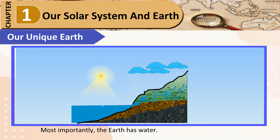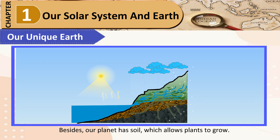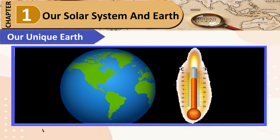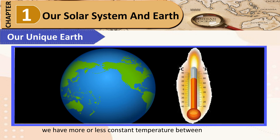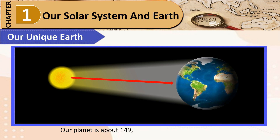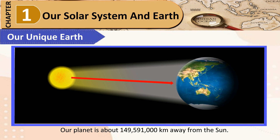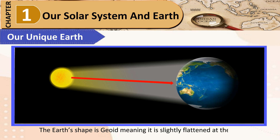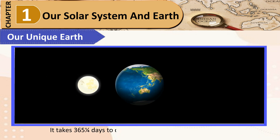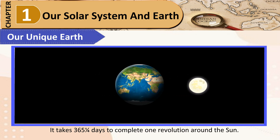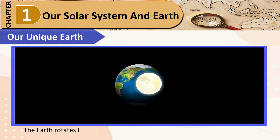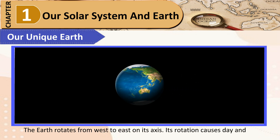Most importantly, the Earth has water, and these conditions support life. Our planet has soil, which allows plants to grow. Though temperatures on the Earth vary from minus 85 degrees Celsius to 65 degrees Celsius, we have a more or less constant temperature between day and night. Our planet is about 149,591,000 km away from the Sun — therefore, it is neither too hot nor too cold. The Earth's shape is geoid, meaning it is slightly flattened at the poles. It takes 365 and a quarter days to complete one revolution around the Sun, and completes one rotation in 24 hours. Its axis of rotation is tilted, and the Earth rotates from west to east, causing day and night.